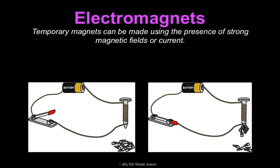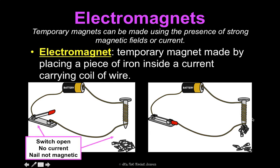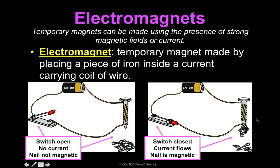And something that connects these two things are called electromagnets. So we can make temporary magnets. They can be made using the presence of strong magnetic fields or even just the presence of current. These are temporary magnets made by placing a piece of metal like iron inside a current-carrying coil of wire. That current creates a magnetic field. So notice in this first picture, the switch is open. This is an open path, so current is not going to flow. So this iron nail is not attracting these paperclips in any way. Now, when I close the switch, current is now flowing. That creates a current which creates a magnetic field which is able to attract the paperclips. So again, switch open, there's no current. Thus, the nail's not magnetic. Switch close, there is current flowing. The nail can act magnetic. It's an electromagnet.